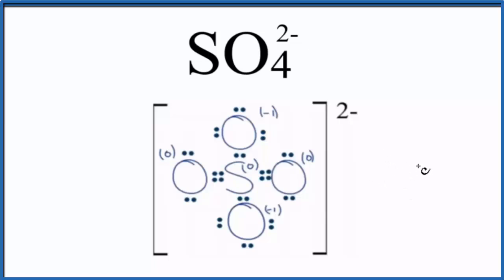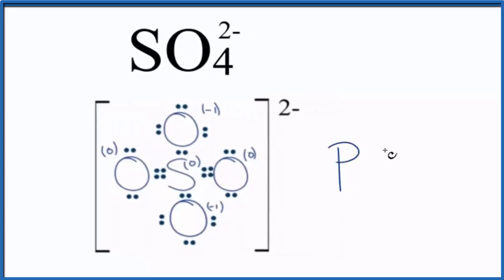Sometimes you'll see structures where you know you have to have an expanded octet. For example, if you had phosphorus pentachloride, that's going to have to have an expanded octet because you're going to need more than four bonds. So you'll have at least 10 valence electrons around the phosphorus. Something like SF6, you know you have an expanded octet.